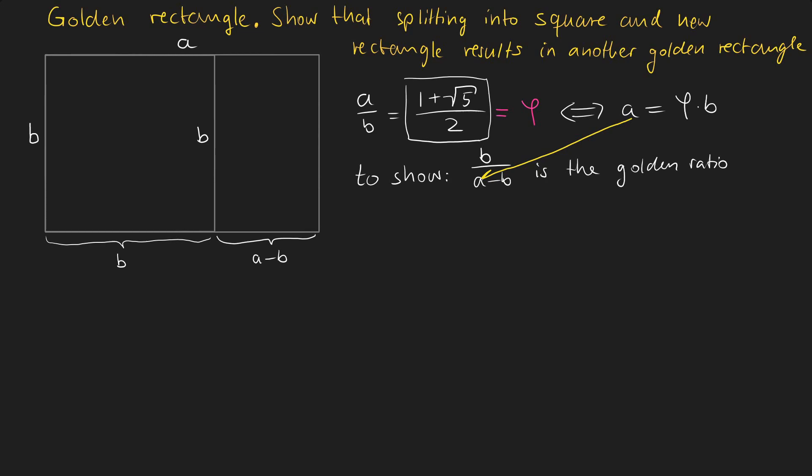And now we can plug A into this term here. And we get B over phi times B minus B. In the next step we can just factor out the common term B. Thus we get B times phi minus 1. Now we can just cancel out B and we are left with phi minus 1.